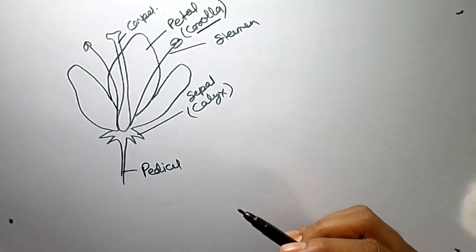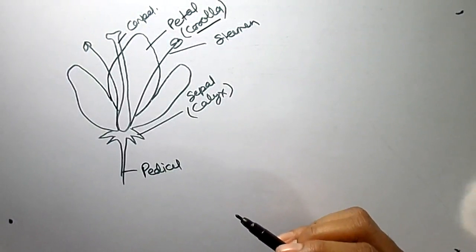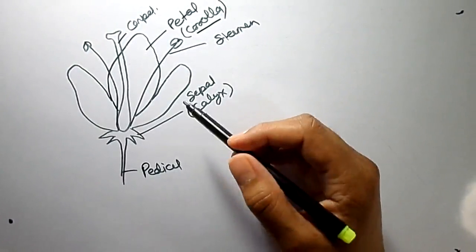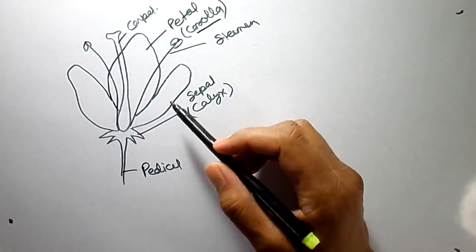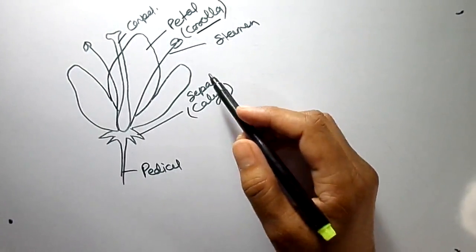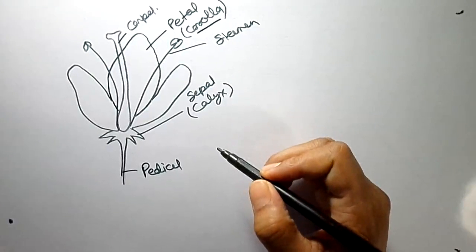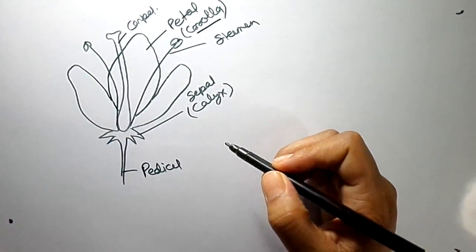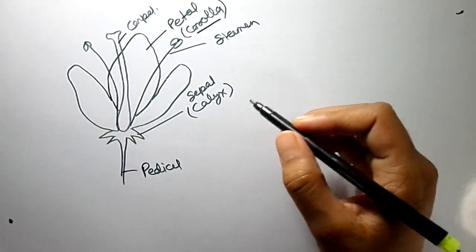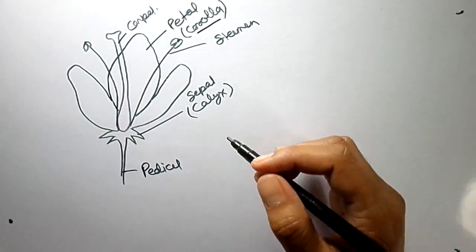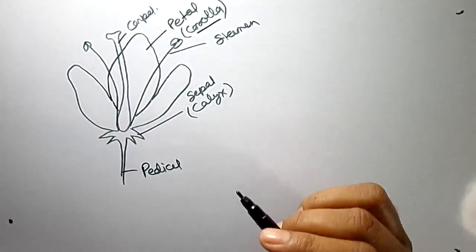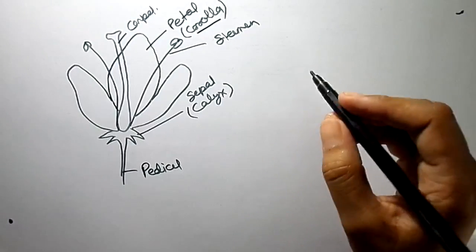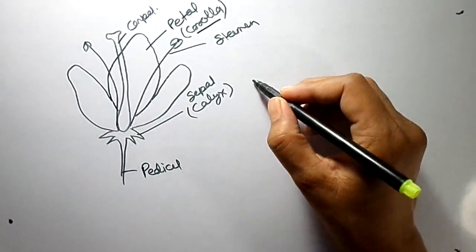Hello friends, today we will learn the parts of a flower. So here you can see a flower. There are basically four main parts of a flower.